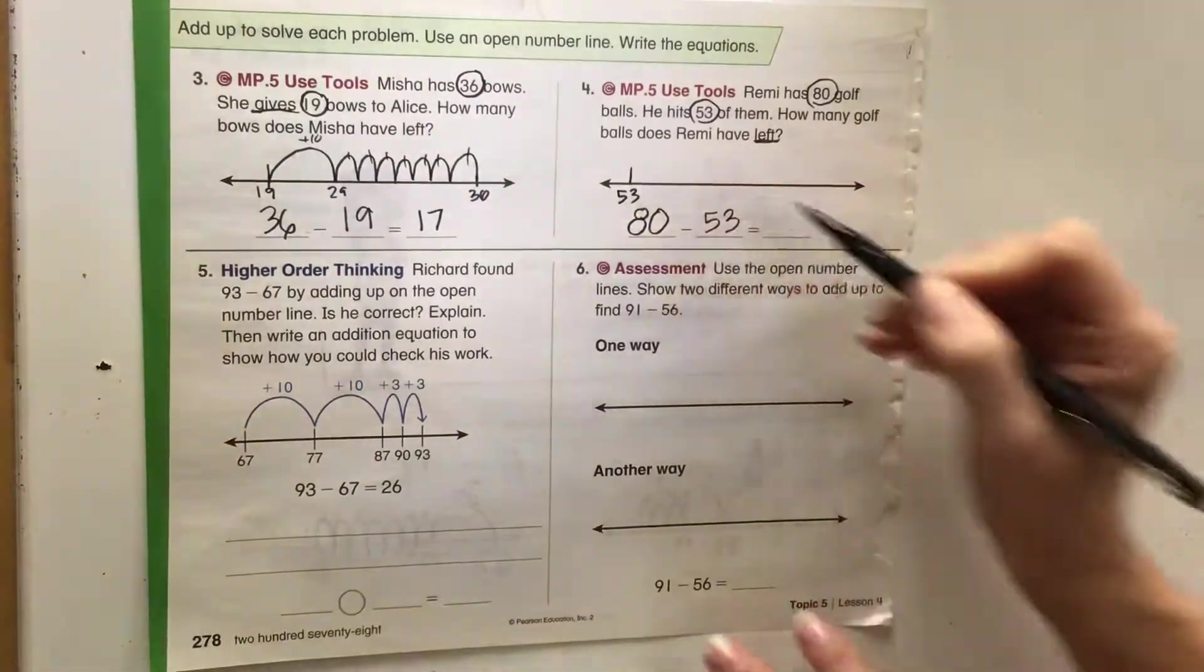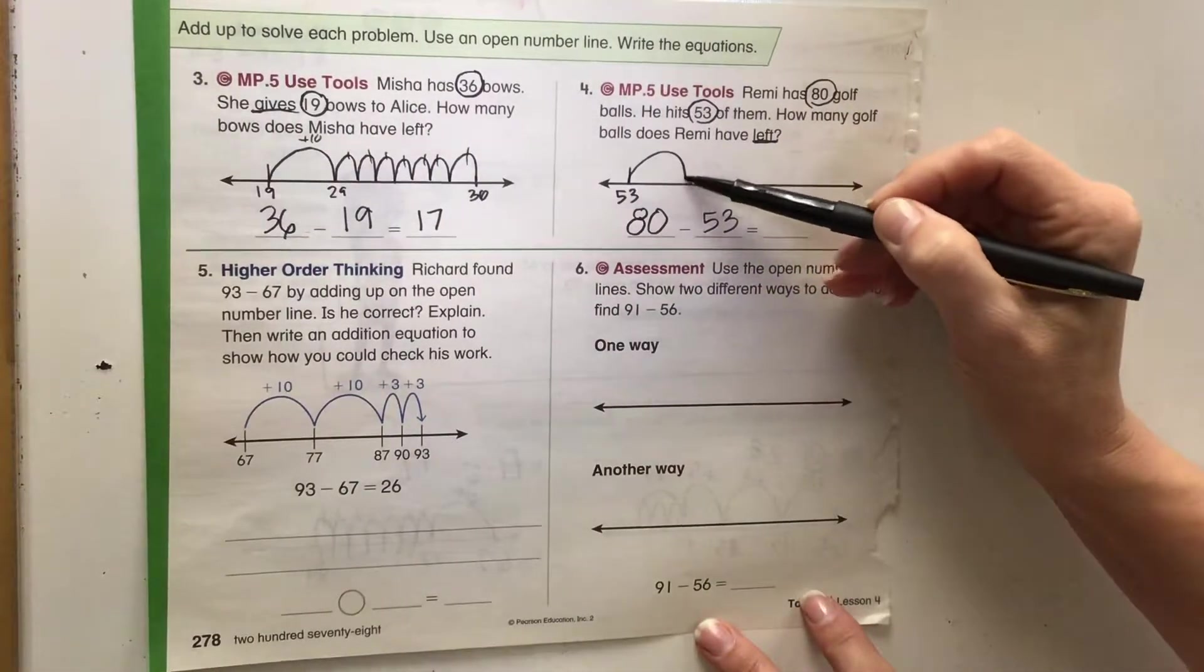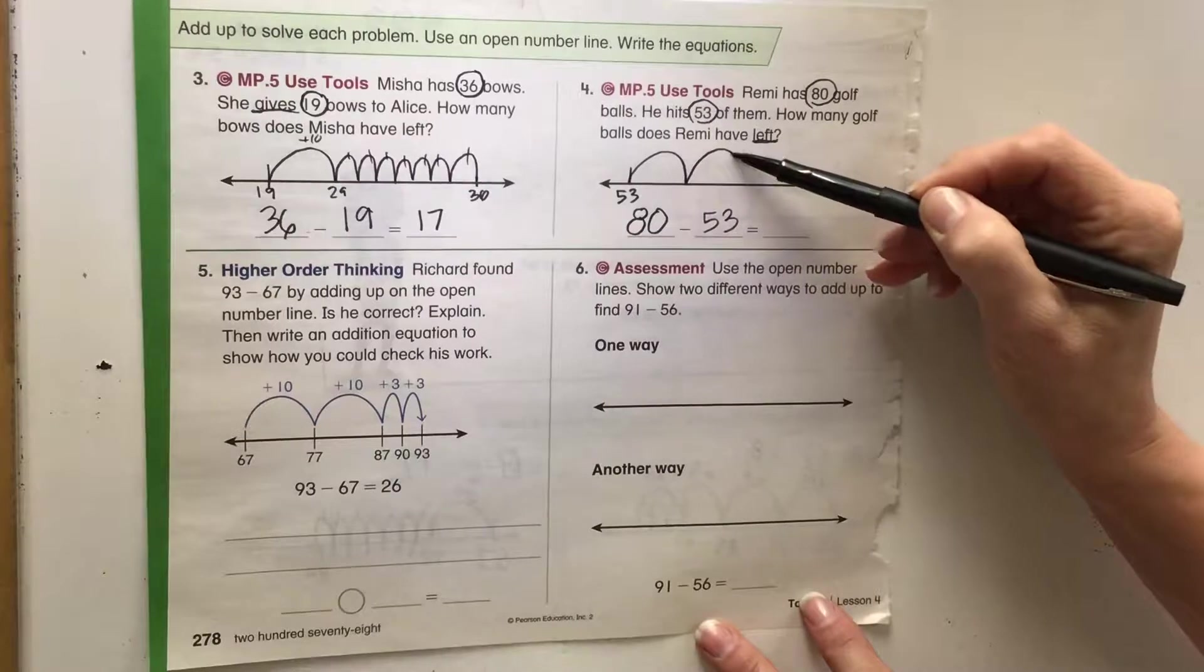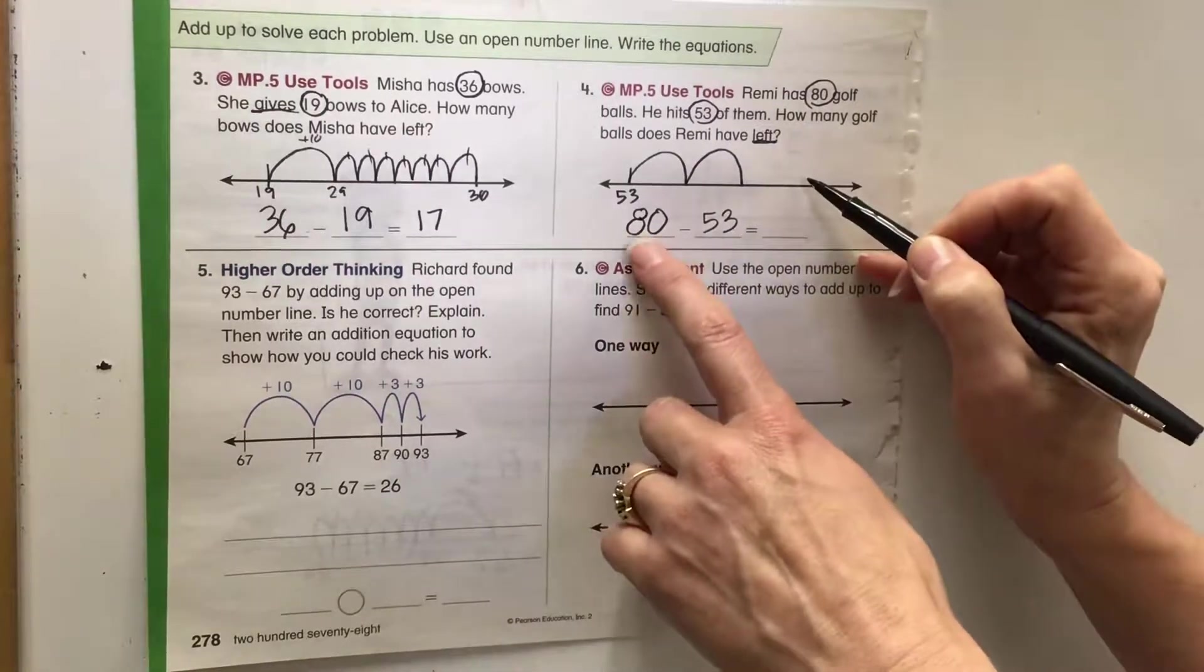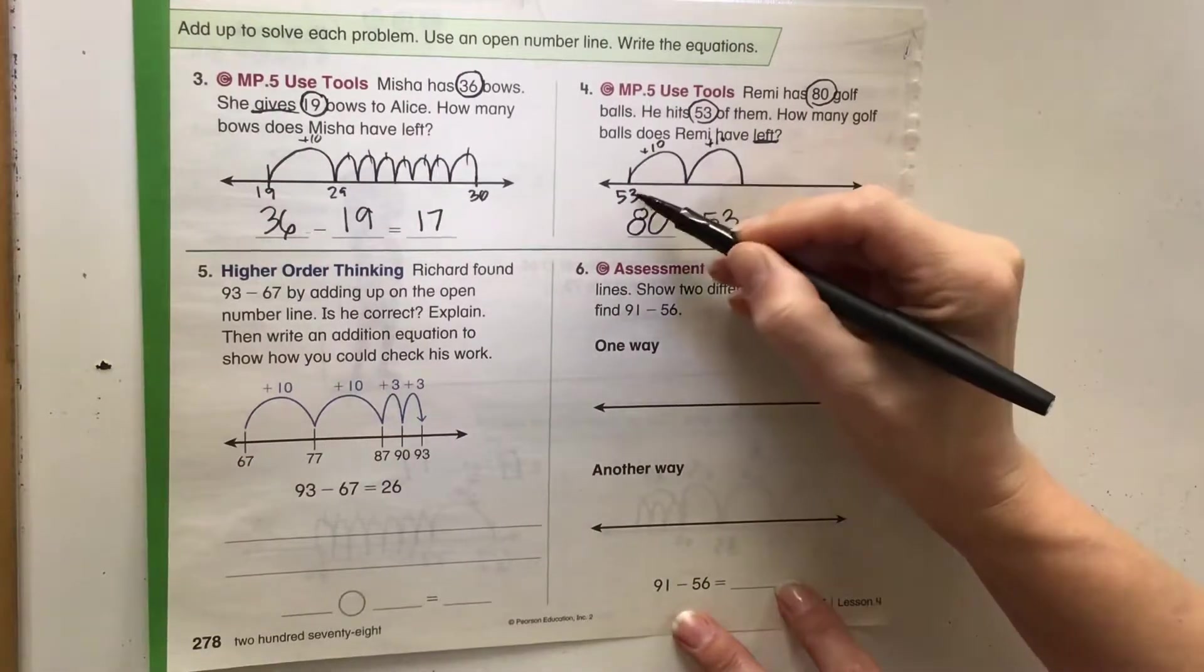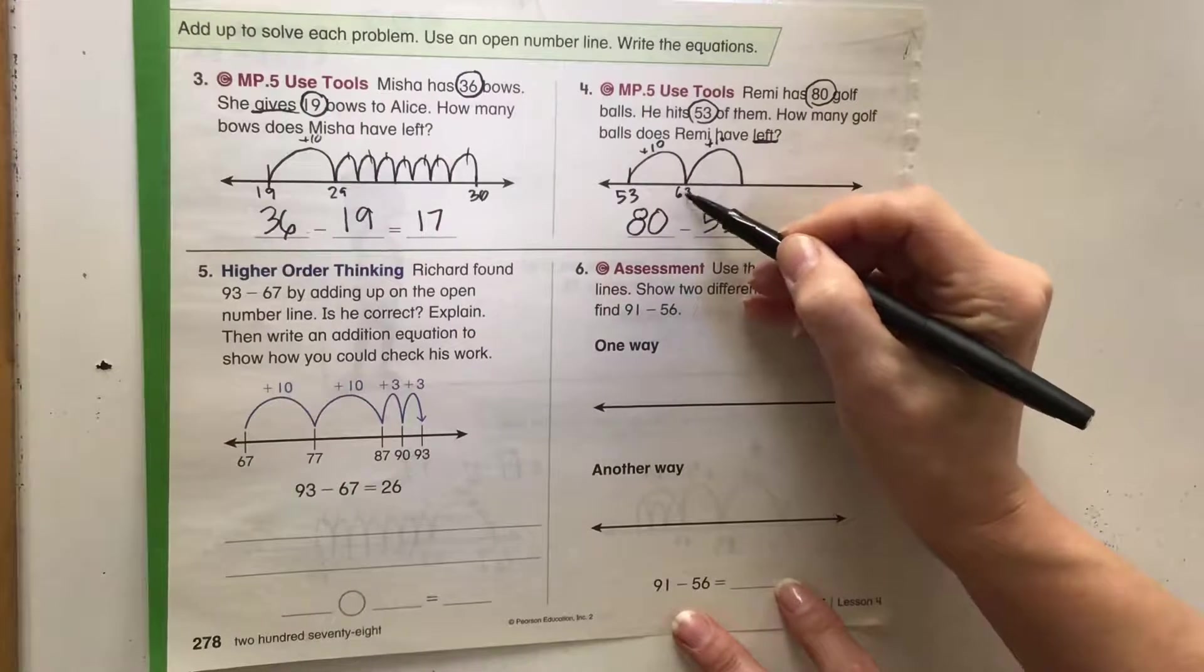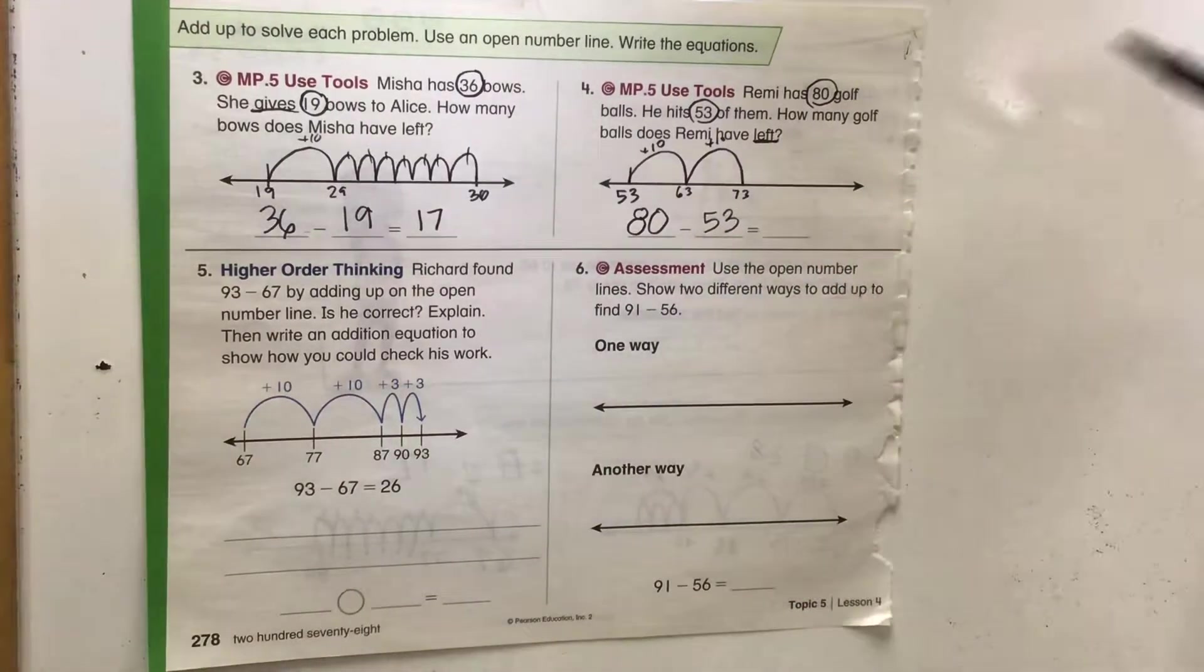80 minus 53, we'll start at 53. Our goal is to get to 80. So 53, let's count by tens: 63, 73. If we do another one, that'll put us at 83, that's too high. Can't go over 80. So we add our plus tens: 53 plus 10 is 63, 63 plus 10 is 73. We need to get up to 80.